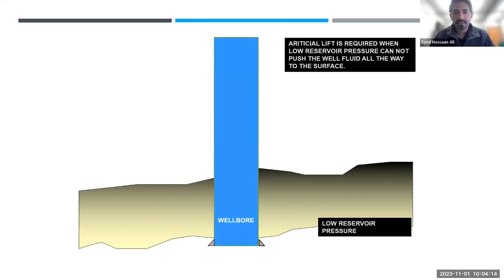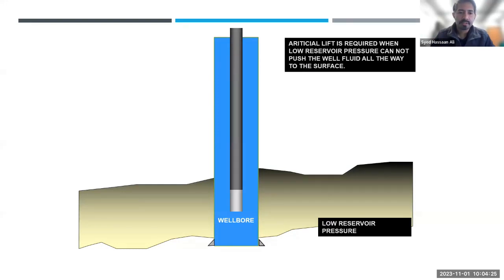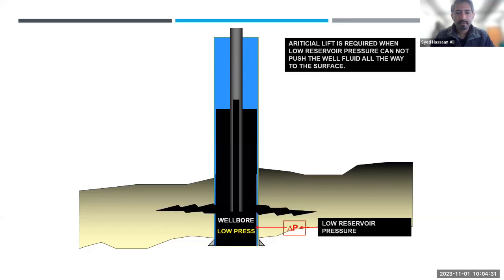Sometimes this is not the case, especially when you have mature fields. You drill a well and the reservoir pressure is not enough to push fluid all the way to the surface. You deploy your tubing, complete the perforations, and fluid rises to a certain level in the wellbore but doesn't have enough energy to reach the surface. In this case, you deploy what we call artificial lift systems — different types of pumping systems deployed downhole to give that fluid the extra energy to get to the surface.